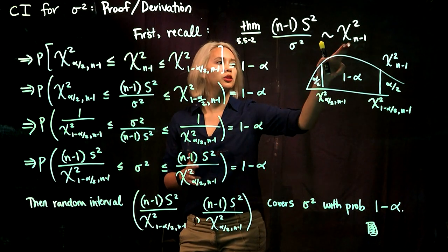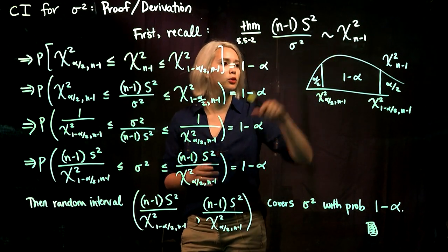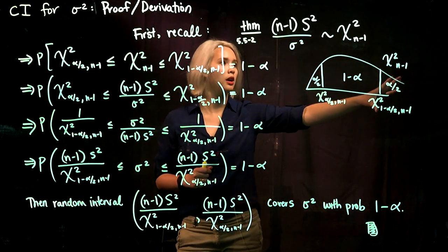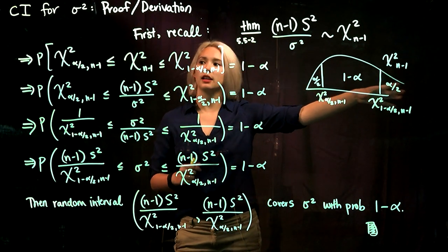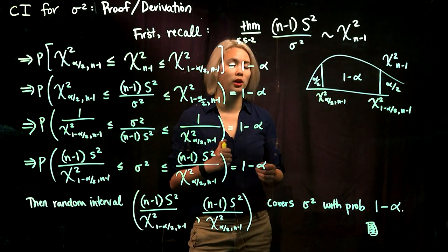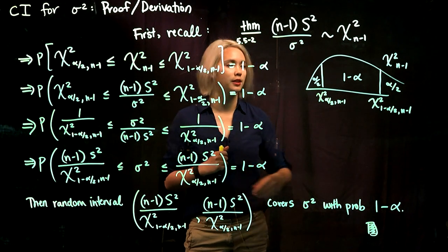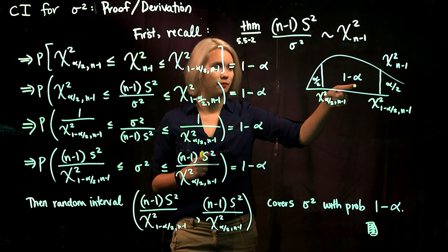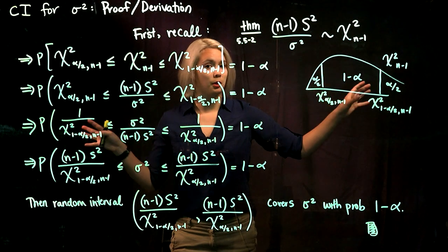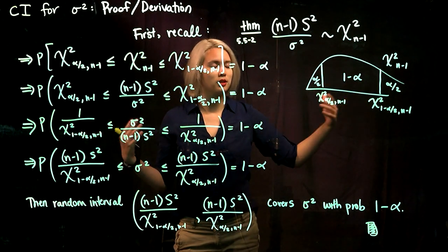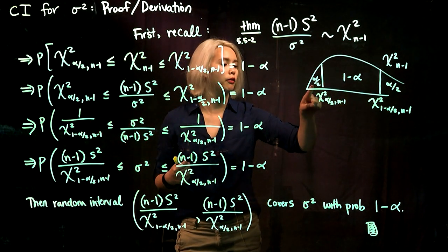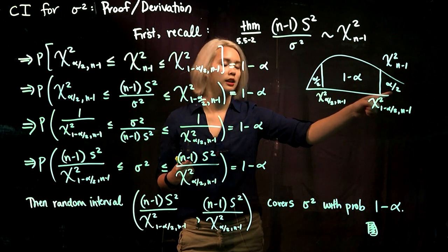Since we're working with this chi-squared distribution with n minus 1 degrees of freedom, we can draw it out. If we're saying that we want a 1 minus alpha times 100% confidence interval, then we put 1 minus alpha in the middle. That leaves alpha to be split between the two tails, and we decide to split it evenly so we have alpha over 2 in each tail.